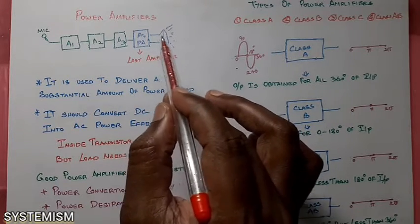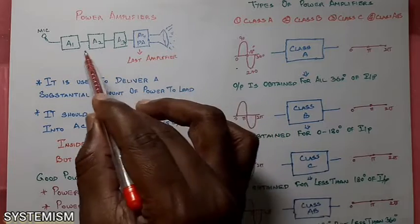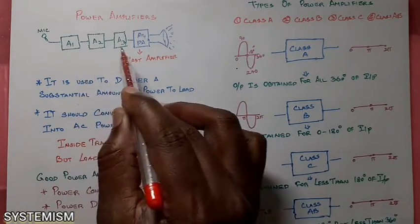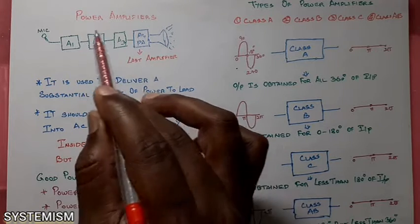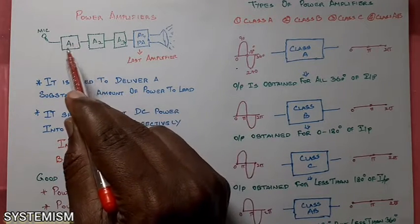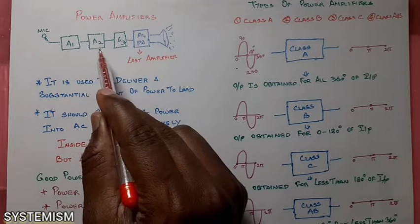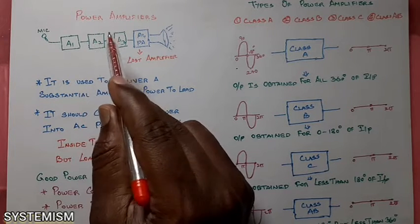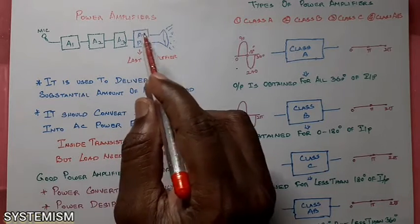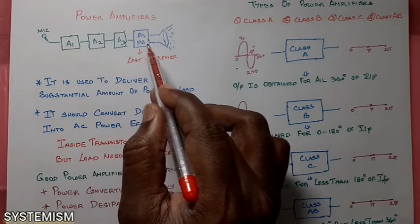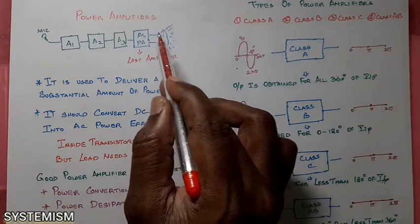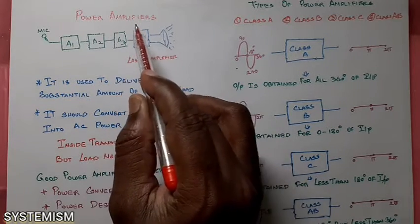But in a normal condition, we will not use only a single amplifier. Instead, there will be a series of amplifiers. Amplifier 1 amplifies to a particular level, then it gives to the next amplifier. The next amplifier amplifies it further and the next amplifier amplifies it again further. But in this series of amplifiers, the last amplifier which is connected to the load is called the power amplifier.